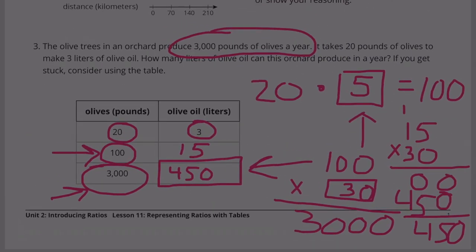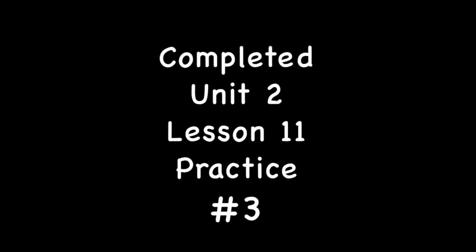That would be 450. So the amount of olive oil produced in one year is 450 liters. Good luck. Thank you.